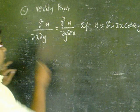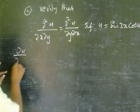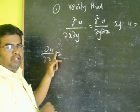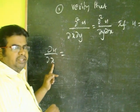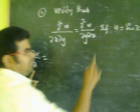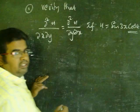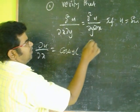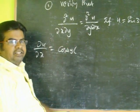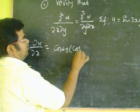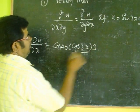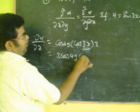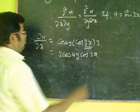First, find what is ∂u/∂x. That is the function u differentiated partially with respect to x. Therefore, we treat y as a constant. So it is cos(4y)·sin(3x), and the derivative of sin(3x) is cos(3x)·3. Then we get 3·cos(4y)·cos(3x). That is ∂u/∂x.